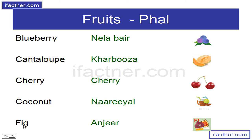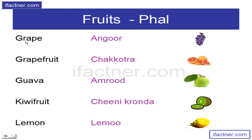Anjeer – Fig, Fig. Angoor – Grape, G-R-A-P-E, Grape. Chakotra – Grapefruit, G-R-A-P-E-F-R-U-I-T, Grapefruit. Amrood – Guava, G-U-A-V-A, Guava.